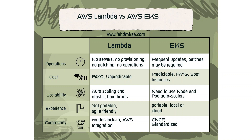EKS cost is predictable and also allows you to use the cloud model of pay-as-you-go. You could also utilize spot instances in EKS for compute to drastically lower the cost if your application supports it. In some cases, you can have more than 90% cost savings if you are using spot instances.